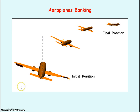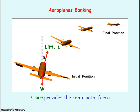An aeroplane needs to bank at an angle relative to the horizontal in order for it to turn left or right — that is, to take a corner. It's not about the weight, but about the lift force, which is always perpendicular to the surface of the wings. This lift force needs a component in the horizontal direction, L sine theta, to provide the centripetal force in order to take the corner. This theory is similar to the conical pendulum in that tan theta equals V squared divided by RG.